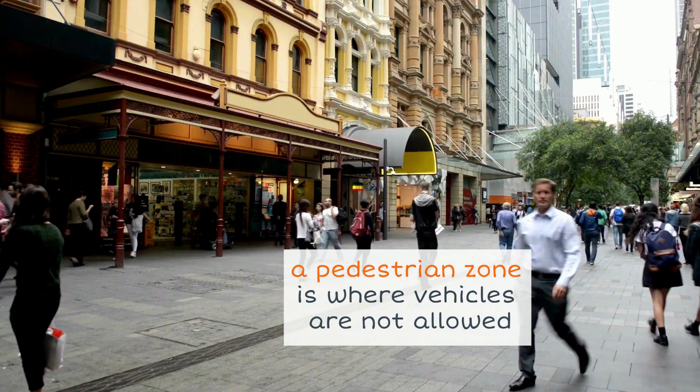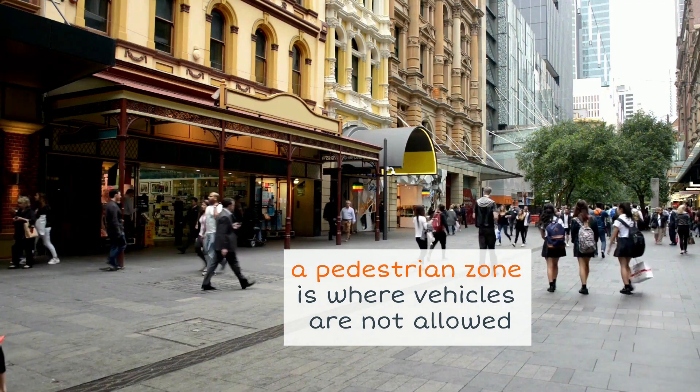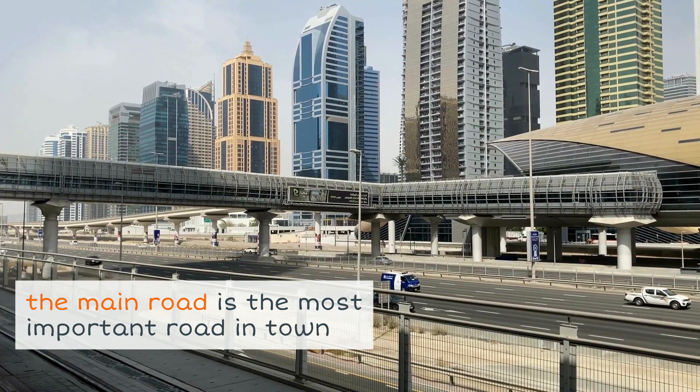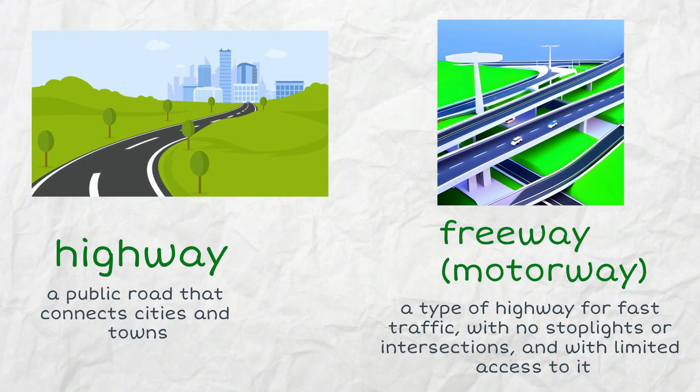A pedestrian zone is where vehicles are not allowed. The main road is the most important road in town, usually with lots of traffic. But what's the difference between a highway and a freeway? A highway is a public road that connects cities and towns. A freeway is a type of highway for fast traffic, with no stoplights or intersections, and with limited access to it. Freeways are also known as motorways in the UK.